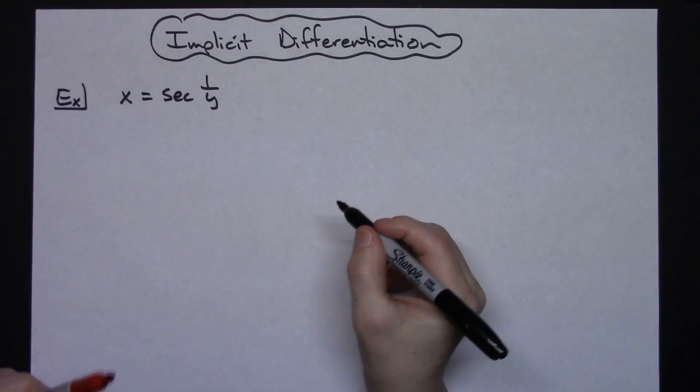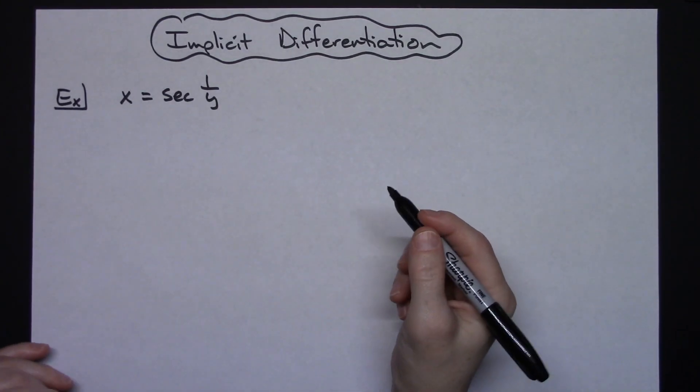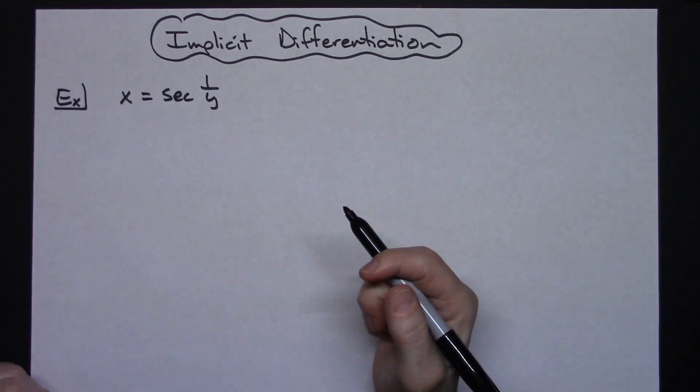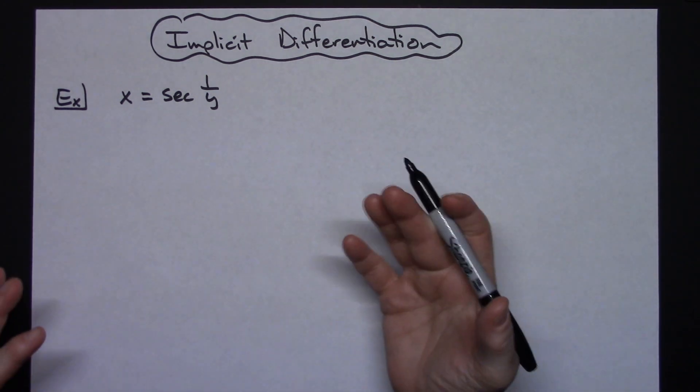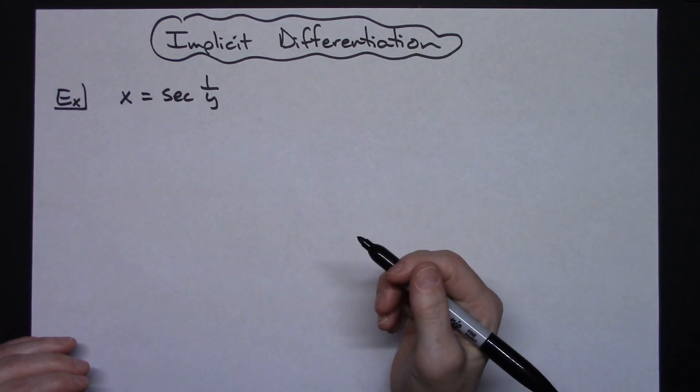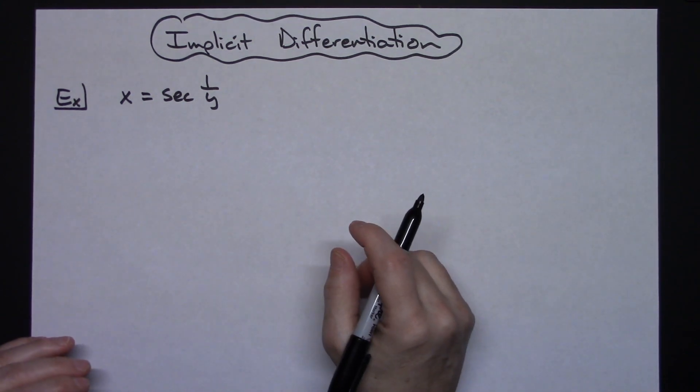In this video I'm going to work out one example of implicit differentiation. I would assume that you've got a little bit of experience with this and then this would just be used as a practice problem for someone that's probably in a Calc I class just learning how to do this.